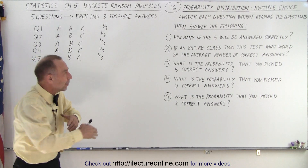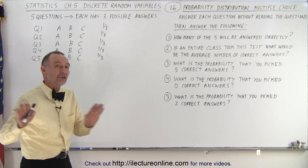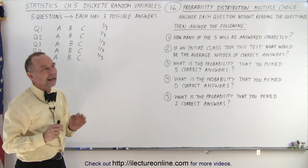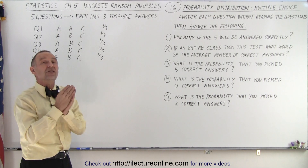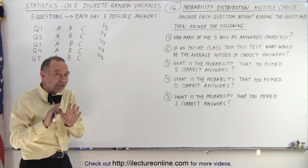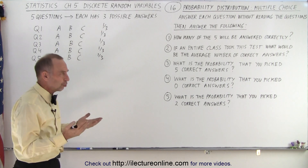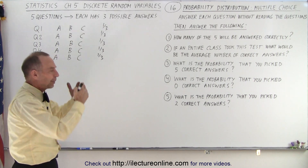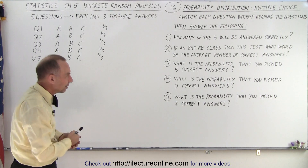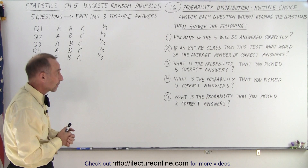What if you did this with an entire class — a big class — and you asked all of the students not to read the questions and to randomly answer them? Now you'd have a distribution. You'd expect that the most likely scenario would be that the number of correct answers on average would be about five out of three, fairly close to that for a large class. The distribution would peak towards the average answer, somewhere around 1.67 or five over three.